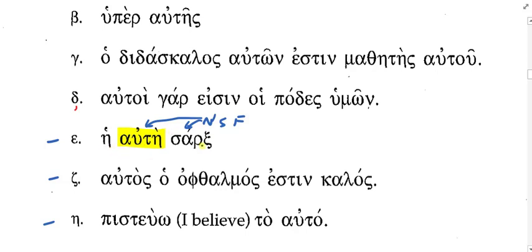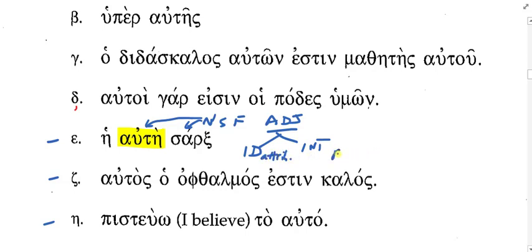This is just another confirmation we're dealing with an adjectival use of 'autos' and not the pronoun. You can't say 'the she flesh.' Now if I figure it's an adjective, I've got two possibilities: identical or intensive. How do you determine which is which? Whether it's in attributive or predicate position. Attributive position means it's identical; predicate position means it's intensive. Which position is this one in? Attributive — the article is in front of the adjective. I need to translate this as the identical adjective: 'the same flesh' or body.